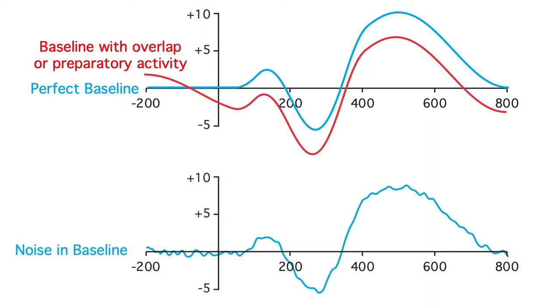A lot of waveforms have a clear tilt in the baseline period, like this. It might be overlapping activity from the previous stimulus, or it might be preparatory activity if the subjects knew that a stimulus is about to appear. But the tilt in the baseline is usually more subtle and somewhat obscured by noise, like this.